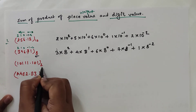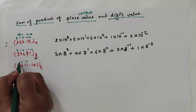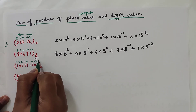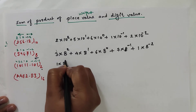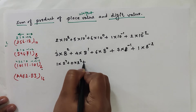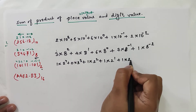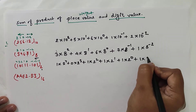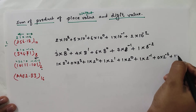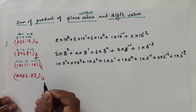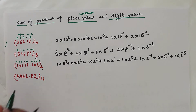For a binary number, the base is 2. Looking at the positions — 4, 3, 2, 1, 0 for the integer part and minus 1, minus 2, minus 3 for the fraction part — we can write it as: 1 × 2⁴ + 0 × 2³ + 1 × 2² + 1 × 2¹ + 1 × 2⁰ + 1 × 2⁻¹ + 0 × 2⁻² + 1 × 2⁻³.